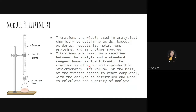So in titrometry, we base our analysis on the fact that when a chemical equation is balanced, we can determine the concentration. The volume or mass of the titrant needed to react completely with the analyte is determined and used to calculate the quantity of the analyte — that's the unknown. The titrant's concentration is given and known when performing the experiment.